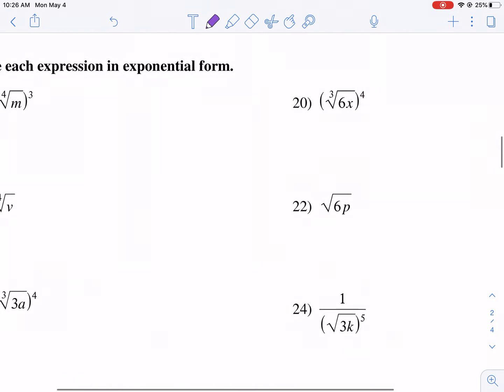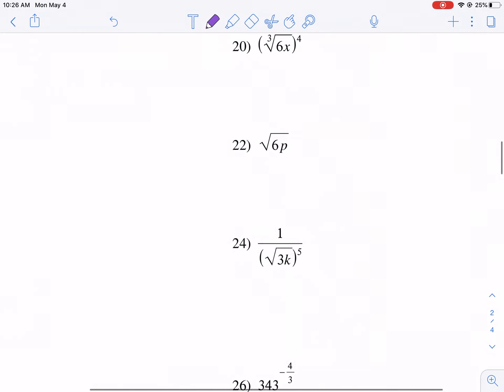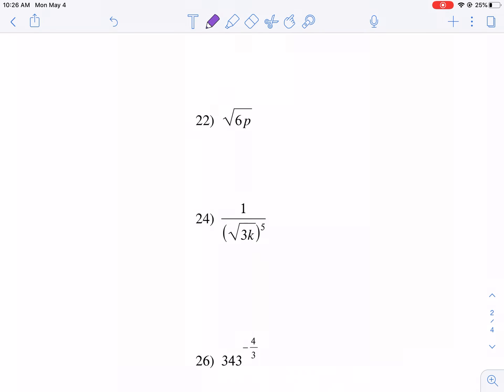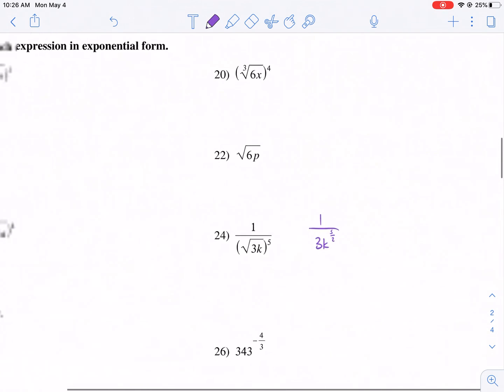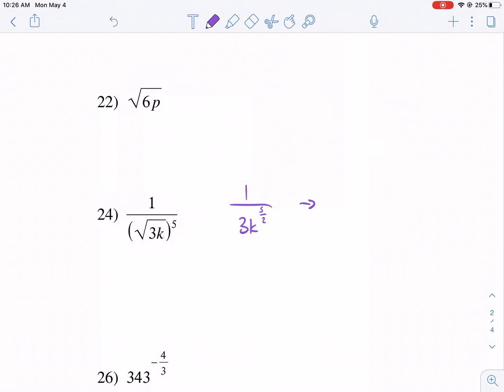Then we have a couple more examples. Let's do number 24. This one looks like the toughest. So 24, we have a 5 in the denominator. So let's first just put this into exponent form in the denominator. We have 3k. It's to the square root, so 2 is going to be in the bottom, and then we have 5 in the top. Now, if we wanted to rewrite this not in a fraction form, see how it's over 1? Well, then that means we can write 3k. I need to put this in parentheses. It's very important you put that in parentheses. Otherwise, the value is not the same. In parentheses to the negative 5 over 2 power. And that's how you do that one.